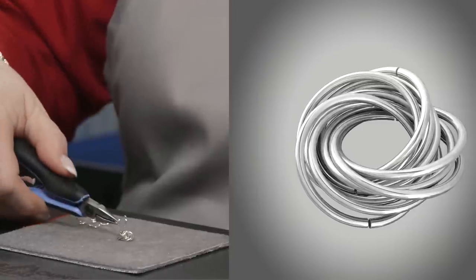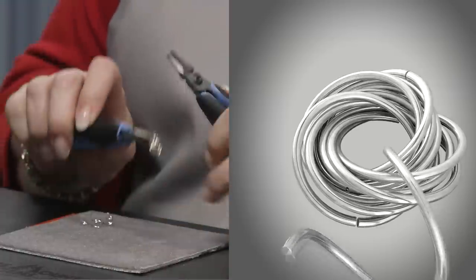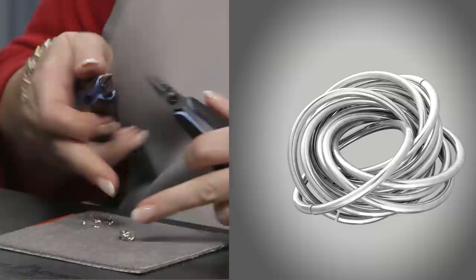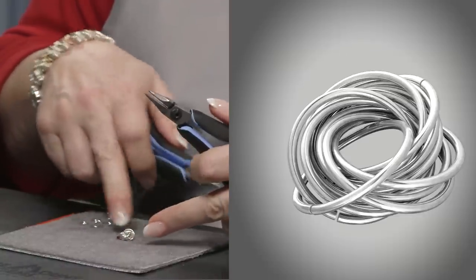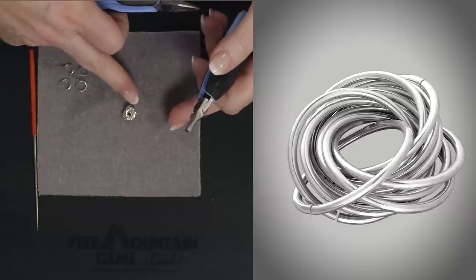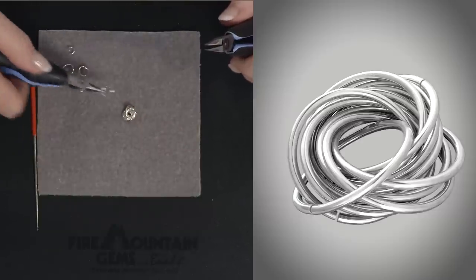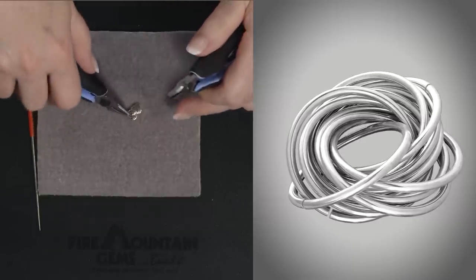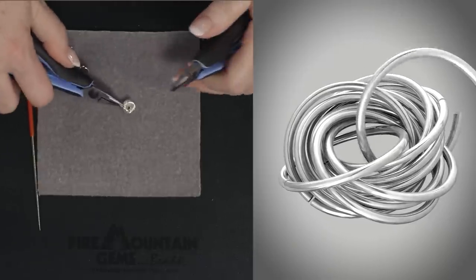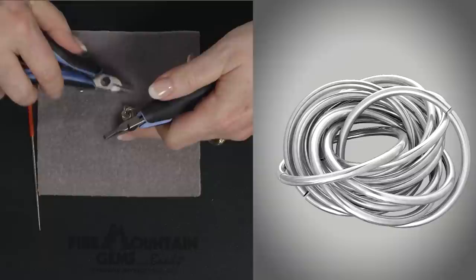I always like to take my jump rings from top down and stab into the nest so that I can catch all of the jump rings that I've put on previously. Okay, another one. See my hole is getting smaller.